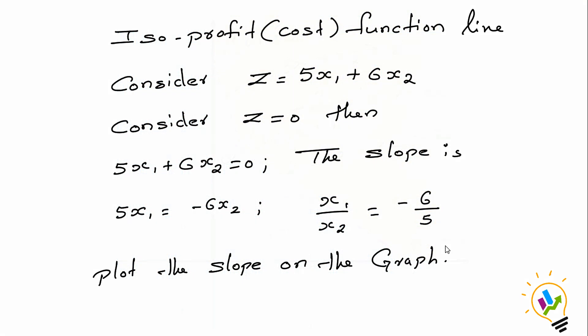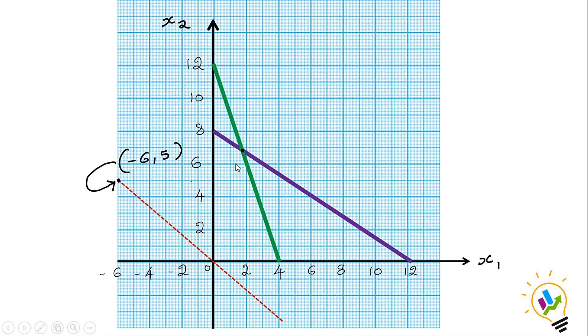For the isoprofit cost function line method, we need to consider z as 0. When we make this objective function 5x1 plus 6x2 equal to 0, we find the slope. 5x1 equals minus 6x2, so x1 divided by x2 equals minus 6 by 5. This is the slope.